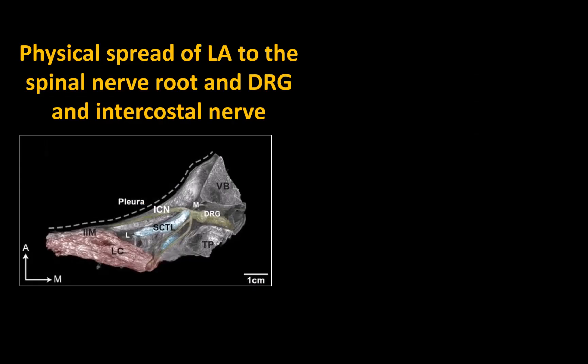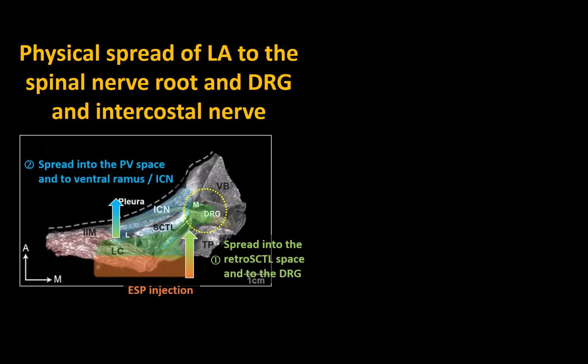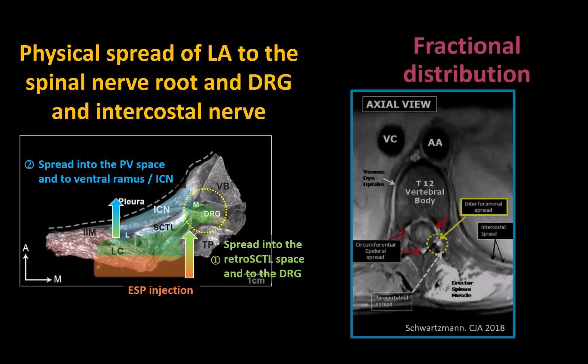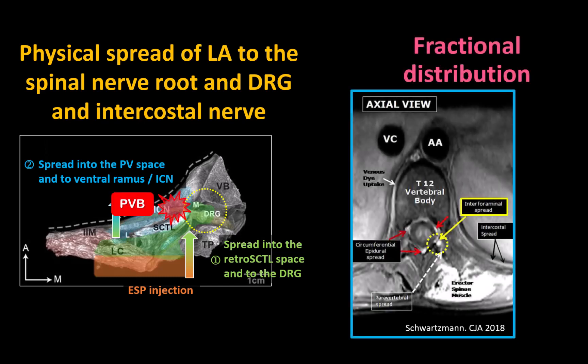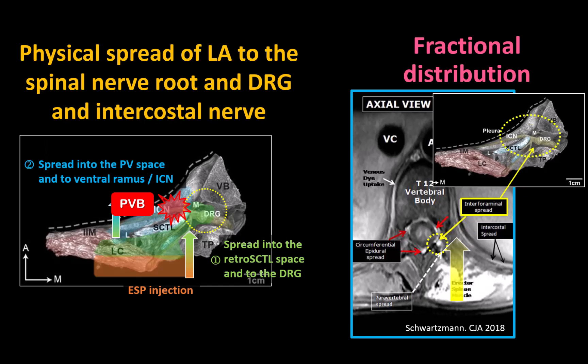To sum up, the ESP block does deliver local anesthetic to the spinal nerve root, the dorsal root ganglion, and the dorsal and ventral rami, and thus it is capable of blocking nociceptive transmission from the periphery to the spinal cord. Compared to a paravertebral block, however, a smaller fraction of the injected local anesthetic and less mass of drug reaches the paravertebral space. Hence, a perfectly performed ESP will never produce neuroblockade that is as profound as a perfectly performed paravertebral block.